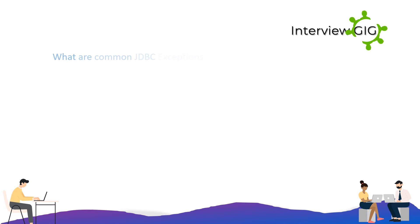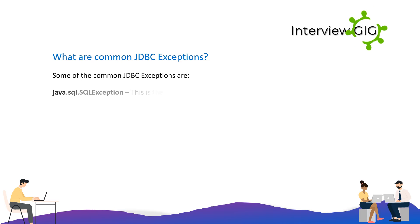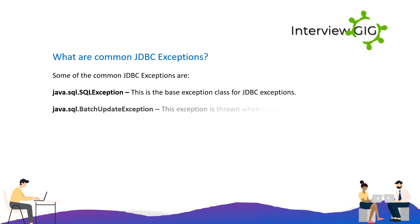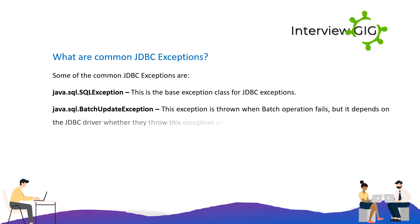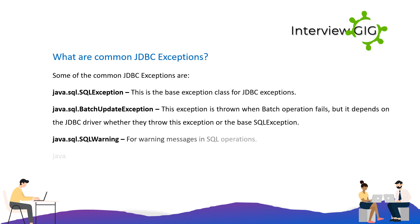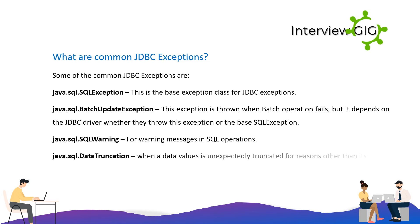What are common JDBC exceptions? Some of the common JDBC exceptions are: java.sql.SQLException — this is the base exception class for JDBC exceptions; java.sql.BatchUpdateException — this exception is thrown when a batch operation fails, though it depends on the JDBC driver whether they throw this or the base SQLException; java.sql.SQLWarning — for warning messages in SQL operations; java.sql.DataTruncation — when a data value is unexpectedly truncated for reasons other than exceeding the max field size.